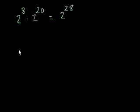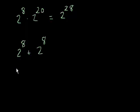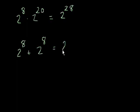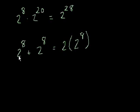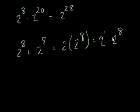What if I had 2 to the eighth plus 2 to the eighth? This is a bit of a trick question. If we're adding, we can't normally simplify it — but there's a little trick: we actually have two copies of 2 to the eighth. So this is the same as 2 times 2 to the eighth, which is 2 to the first times 2 to the eighth, and by the same rule, that equals 2 to the ninth.